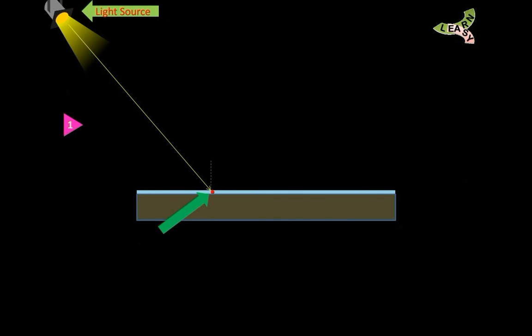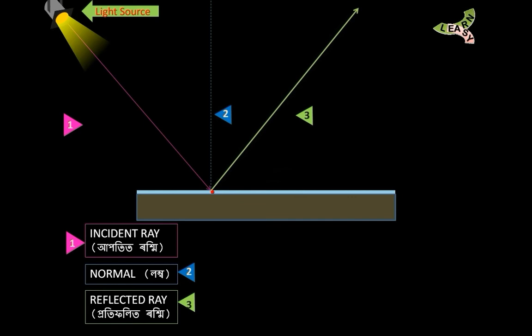Next, the light will reflect back. So first, the pink colored line is the incident ray. Then the blue dotted line is the normal. And the yellow or green colored line is the reflected ray.